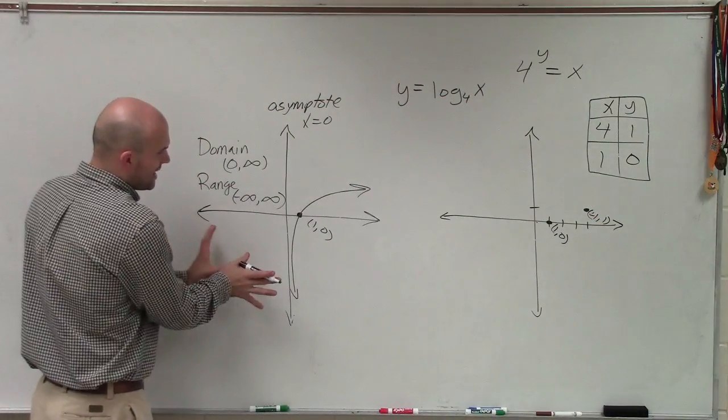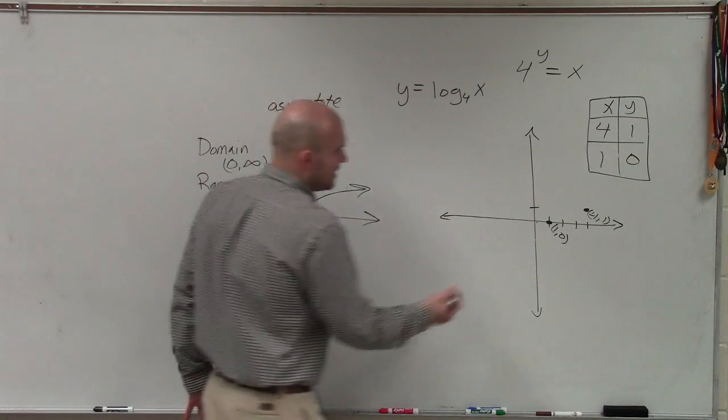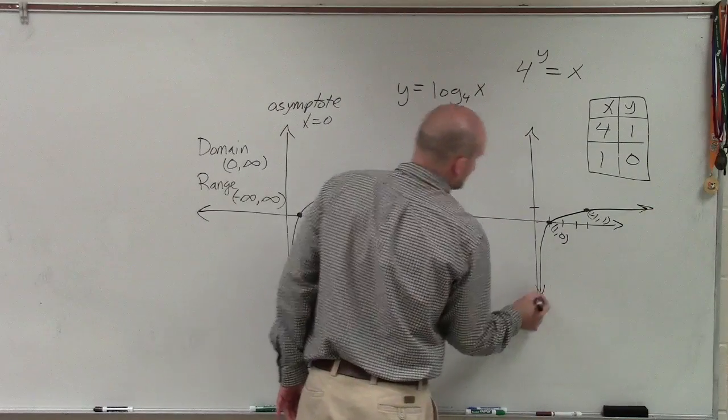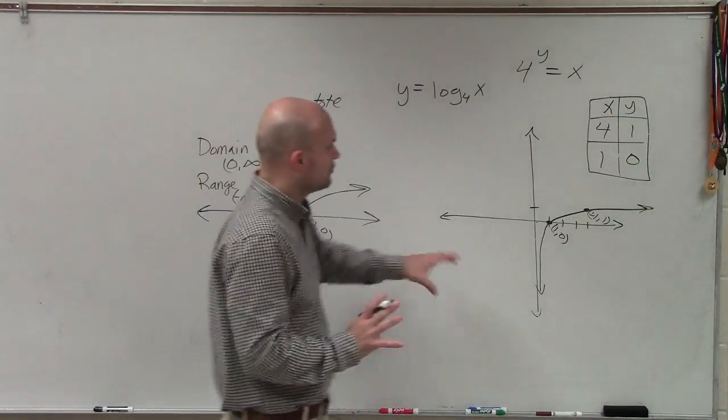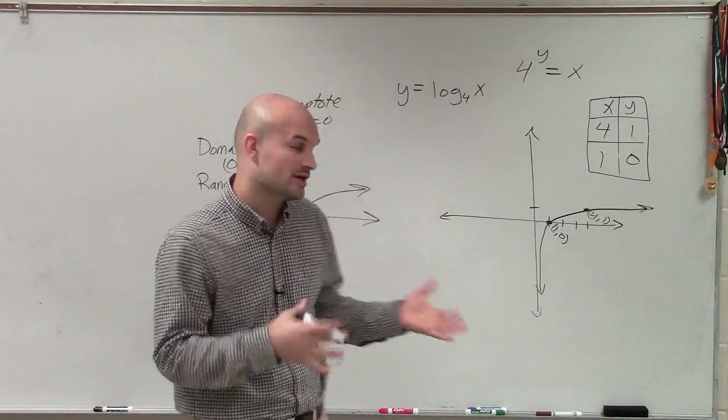And if I follow what my original parent graph, just kind of like the general parent graph, I can see that my graph is going to look something like this. Now, I have not changed the asymptote or shifted anything. Really what the base has done is kind of depend on how sharp my graph is going to increase or decrease.